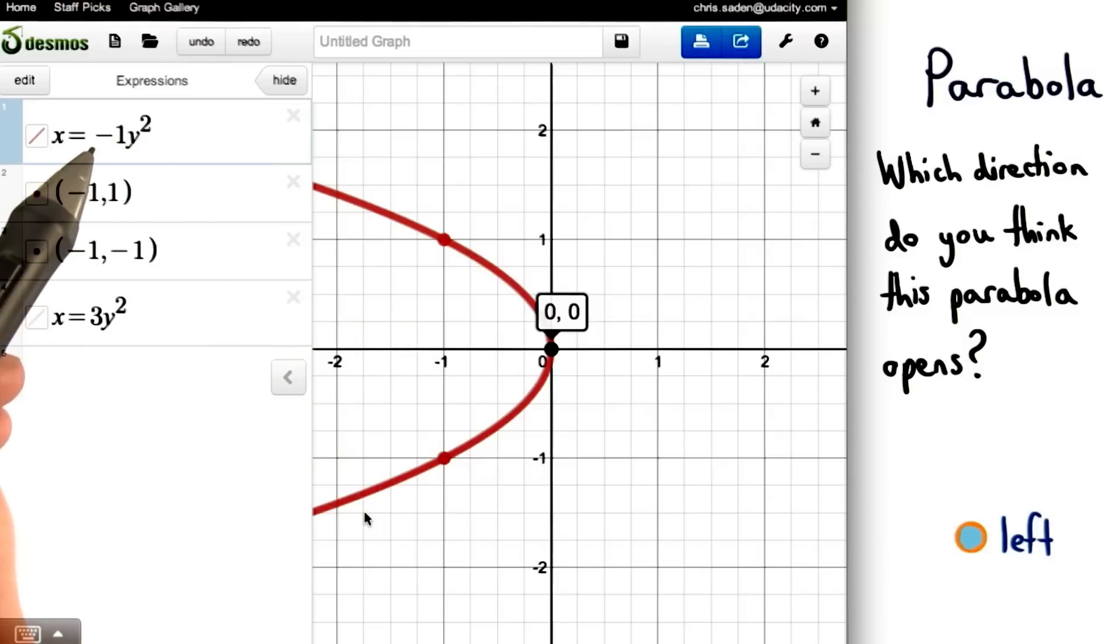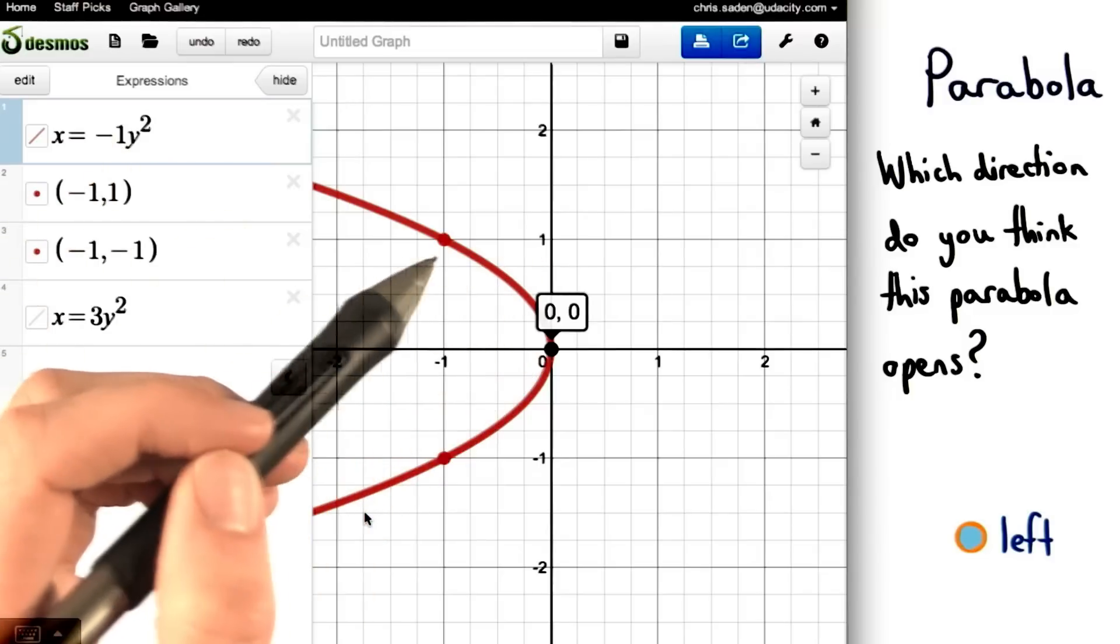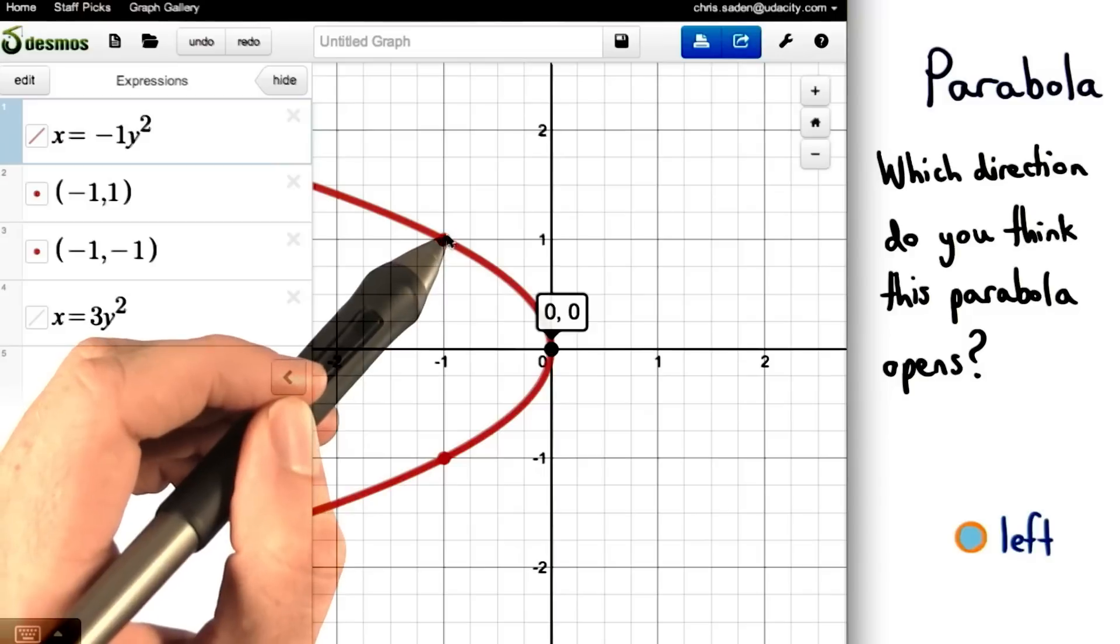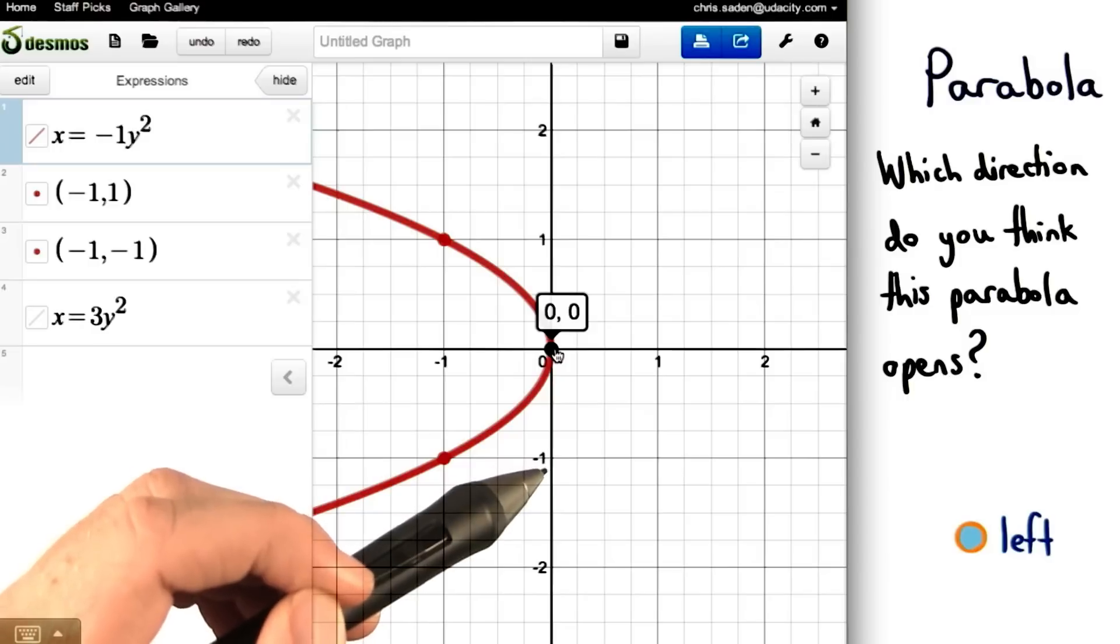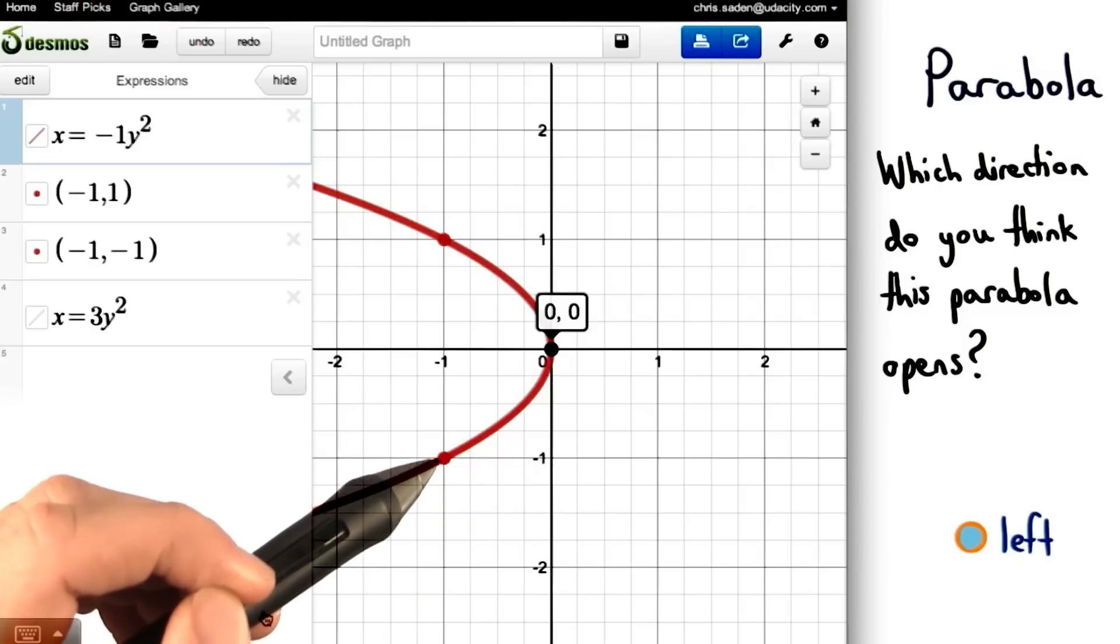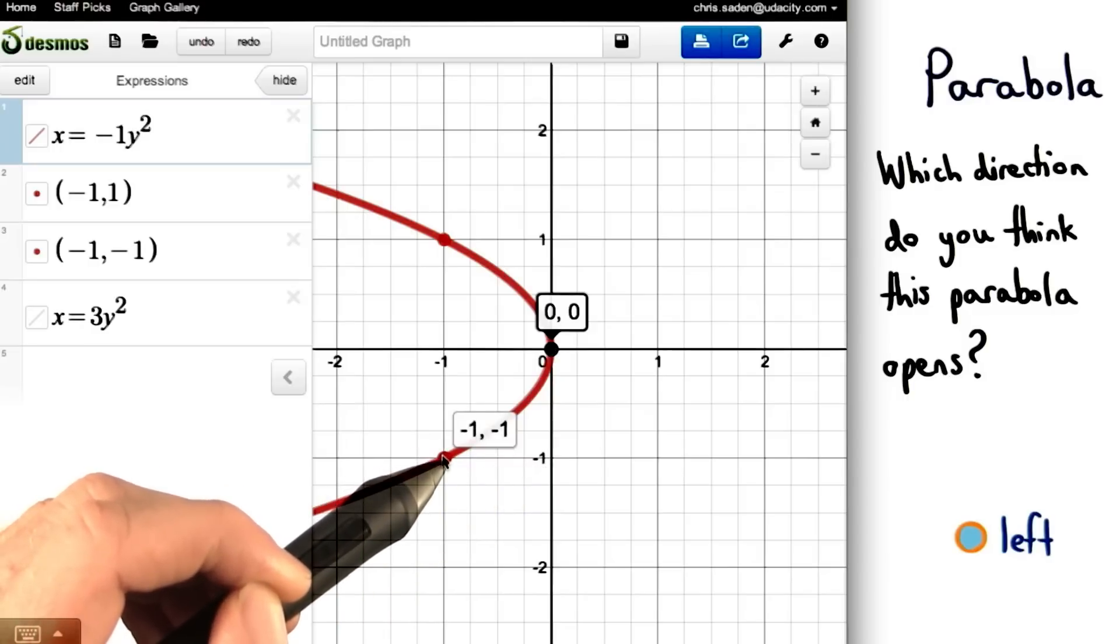So a is negative 1, so I can go one unit up and one unit left. This gives me the point negative 1 comma 1. And if I want to find another point, I can move one unit down and one unit left to get this point, negative 1, negative 1.